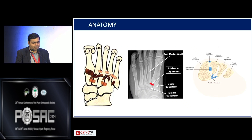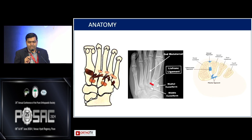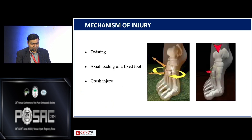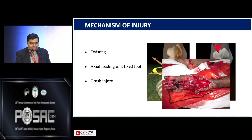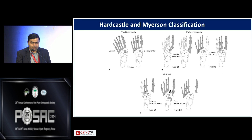Coming to the anatomy, it's a very complex anatomy with a multitude of ligaments — dorsal, interosseous, and plantar ligaments connecting the multiple metatarsals. The main ligament is the Lisfranc ligament, which is between the second metatarsal and the medial cuneiform. You can get a twisting injury of the midfoot, axial loading of a plantar flexed foot, or a severe road traffic accident involving the Lisfranc joint.